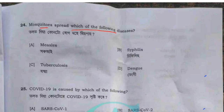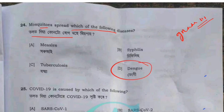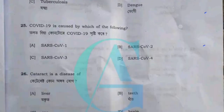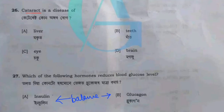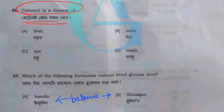Mosquitoes spread which of the following diseases? In English, we have a great examination. Cataract is a disease of which of the following? The answer is option C.